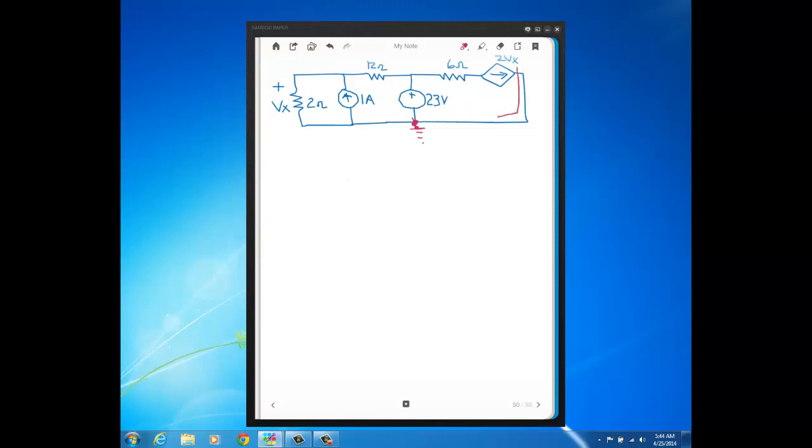This node here is our reference node. So this is ground here where voltage is zero. And then this node here, there's 23 volts at this node with respect to ground.